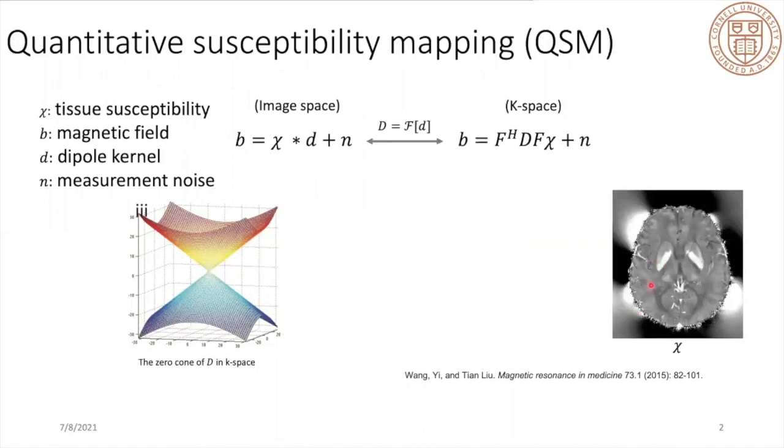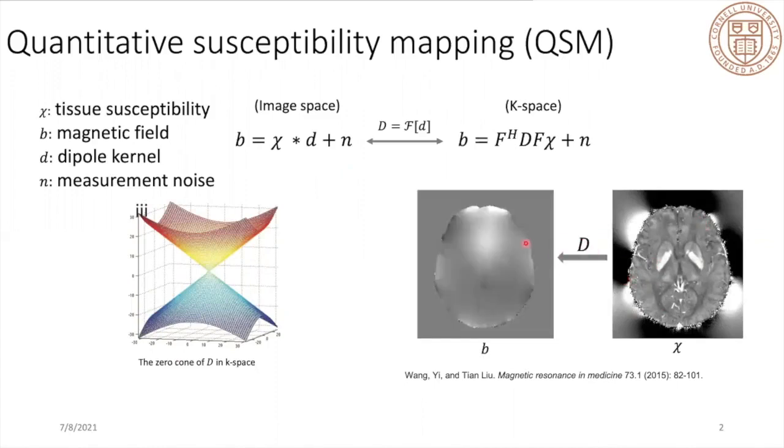Here is the typical susceptibility distribution of the brain. After we convolve this dipole kernel, we get this magnetic field. The problem is how we can do this type of deconvolution process to solve for susceptibility.